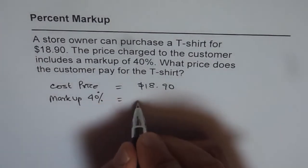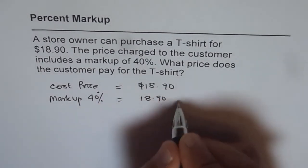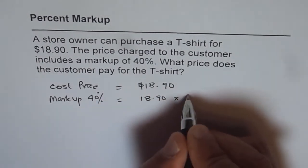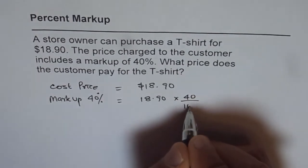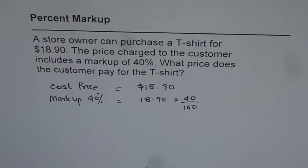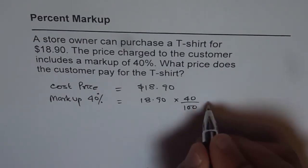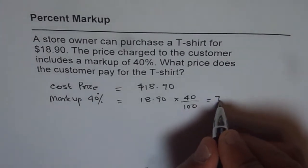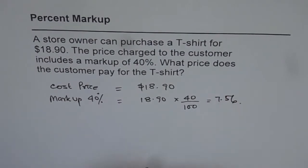That is $18.90 times 40 over 100, or times 0.4. So we can just multiply and get the answer. $18.90 times 0.4 gives us $7.56.